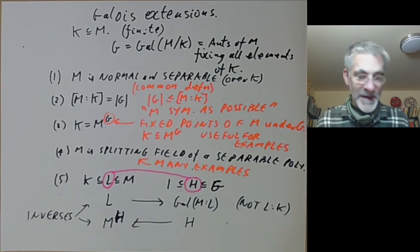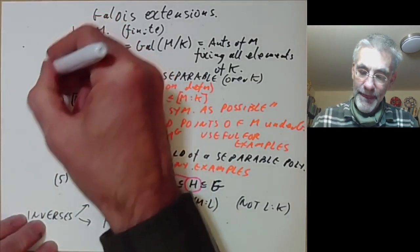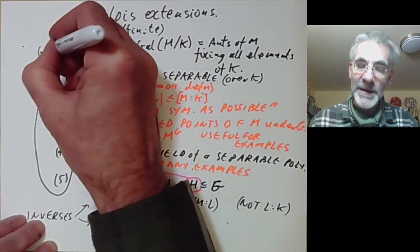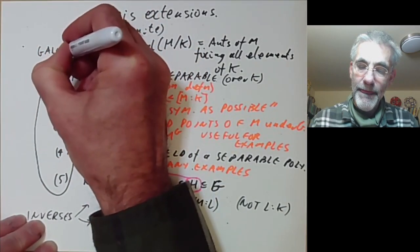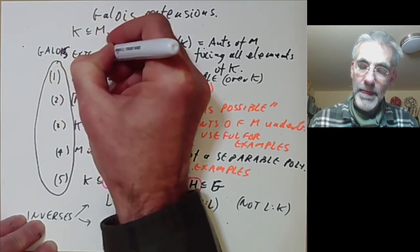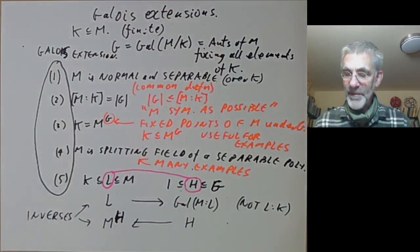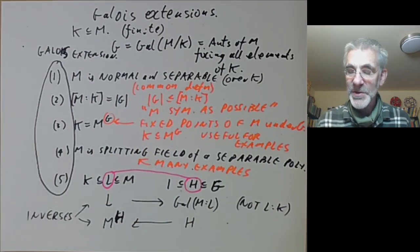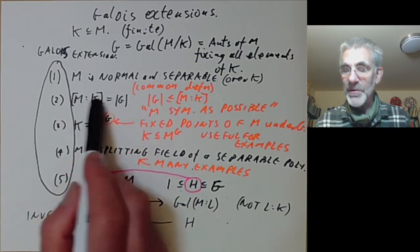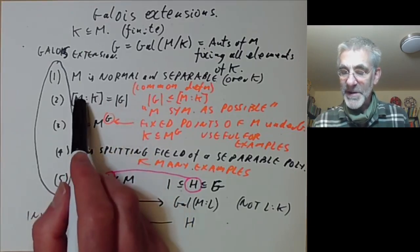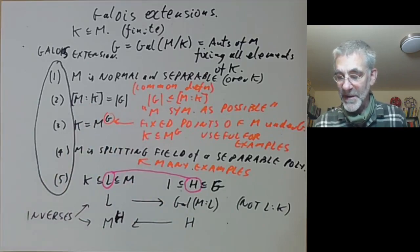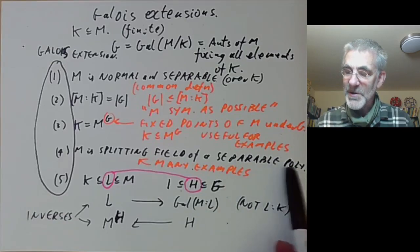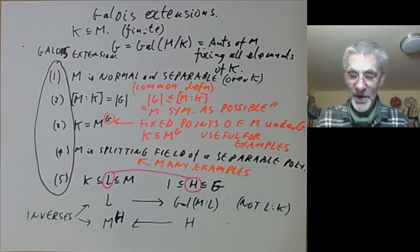Any of these conditions can be used as the definition of a Galois extension, for finite extensions. For infinite Galois extensions you need to be more careful — condition 2 can't be used because the degree will be infinite, and a single polynomial isn't enough; you usually need infinitely many.